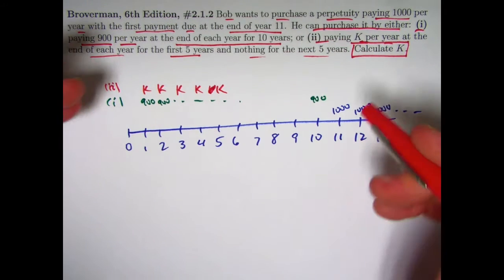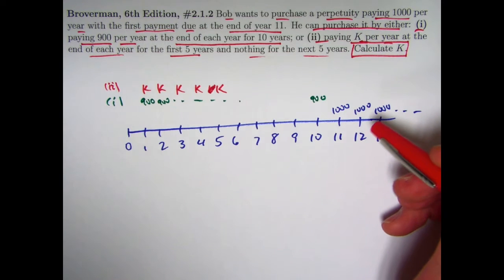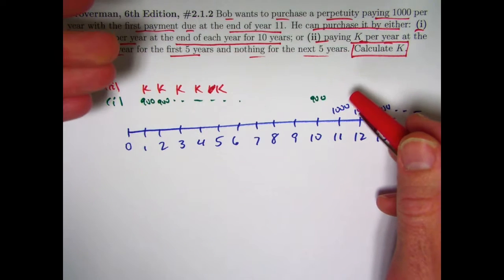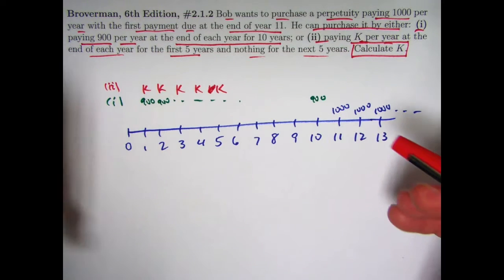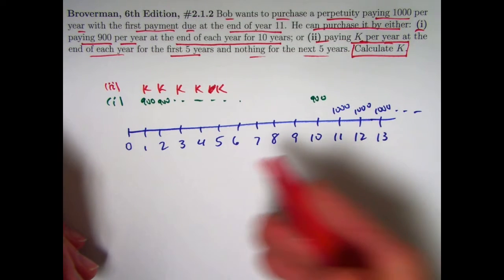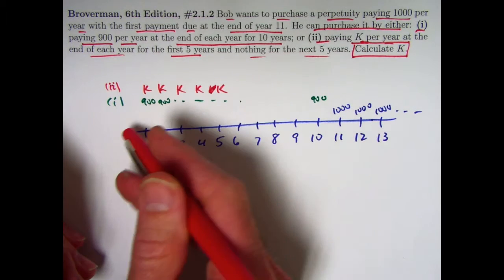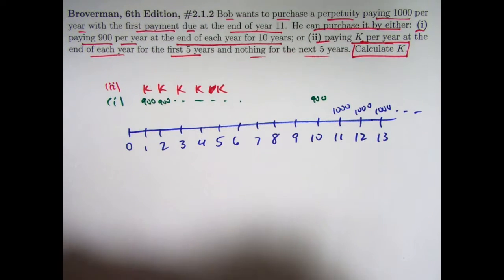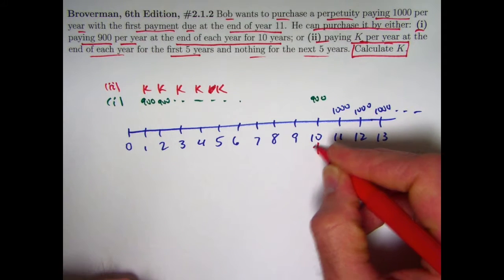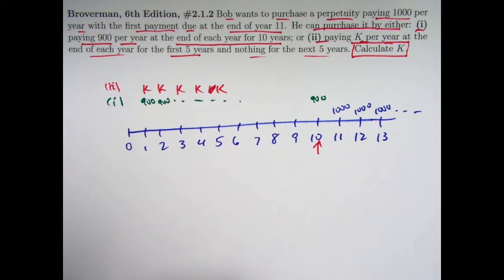The idea here is, and that's hopefully going to enable us to solve for $k, is that the values of these three different income streams should be equivalent. They should be the same at any moment in time. I could pull all these back to time zero or some other time. And in fact, I think it turns out to be easiest to evaluate the values of these different income streams at time 10.